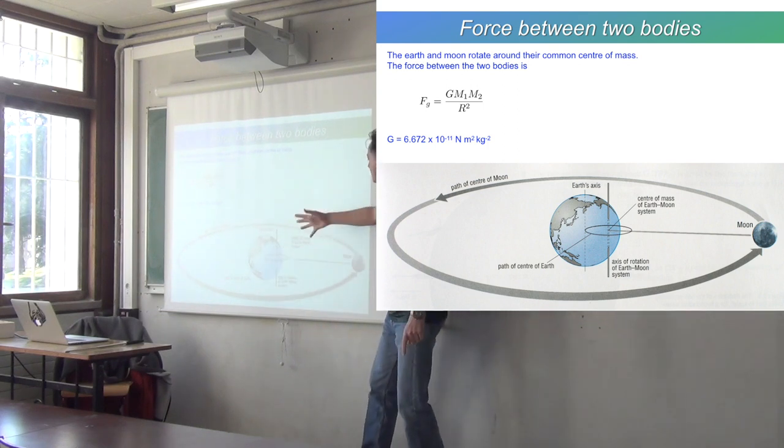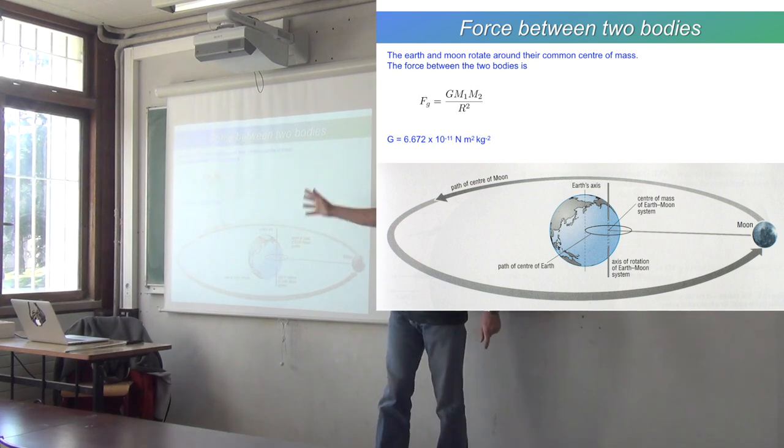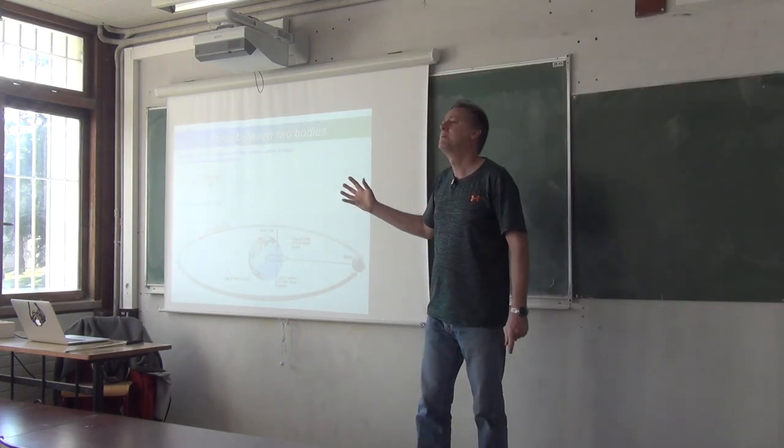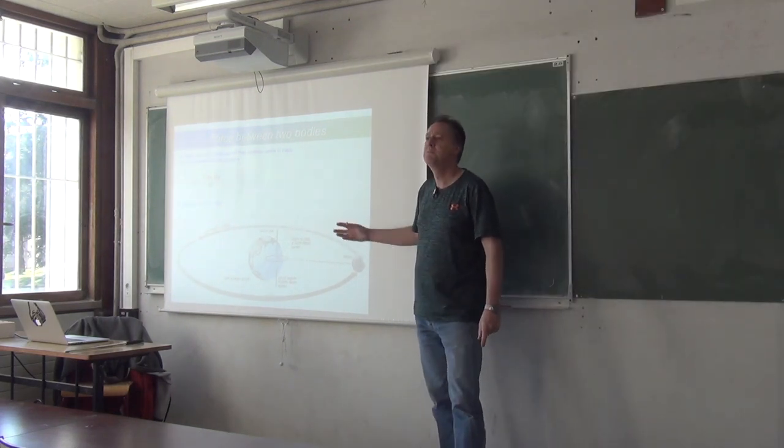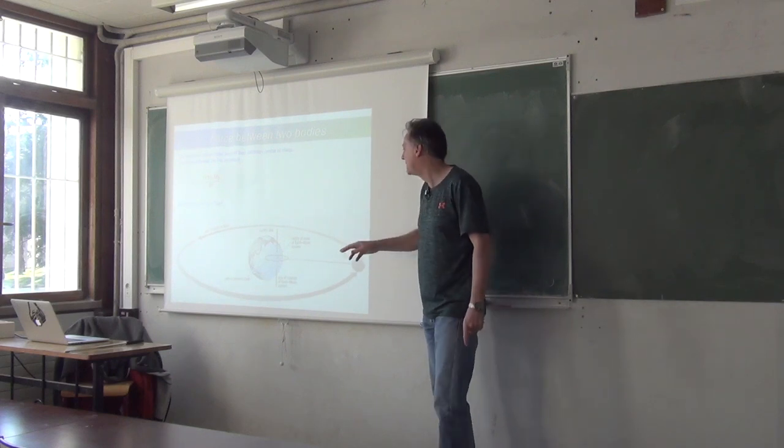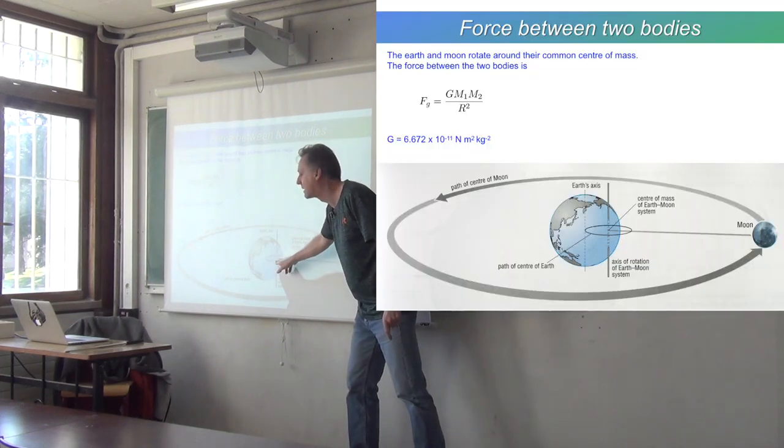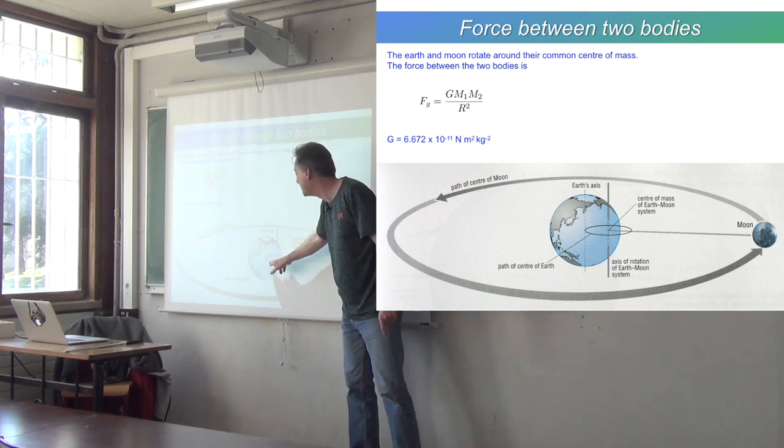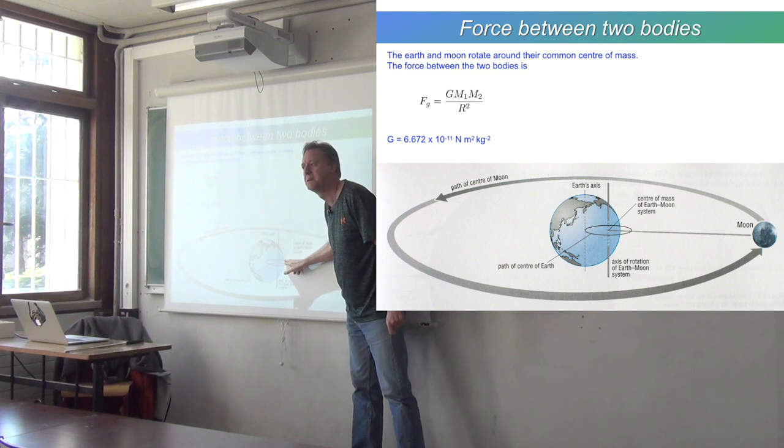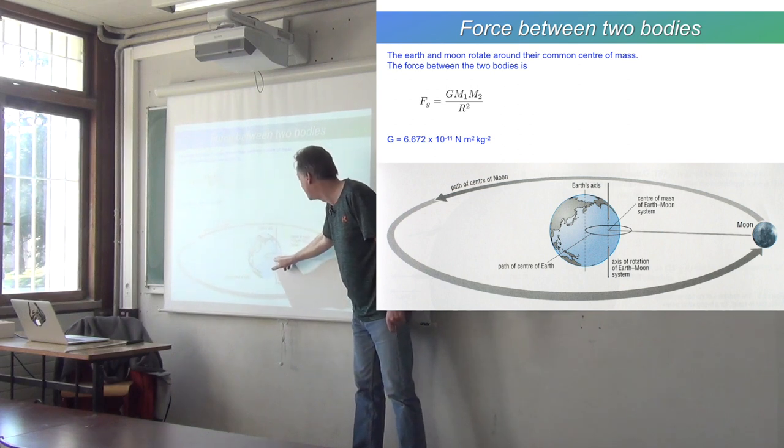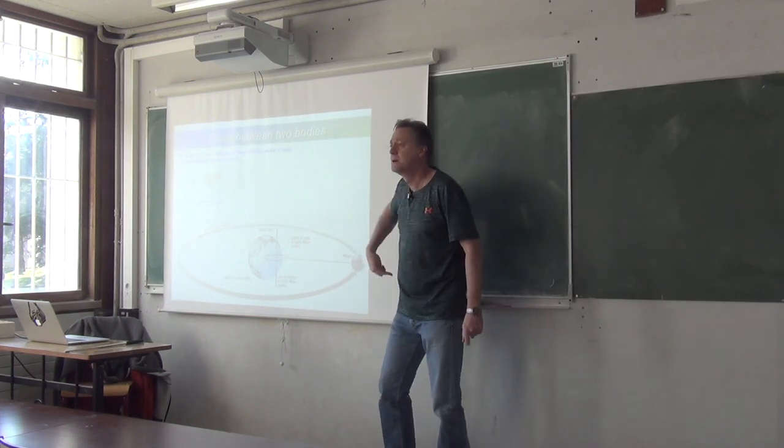The Earth and the Moon dance around their common center of mass, but the Earth is something like 100 times more massive than the Moon. So that common center of mass is actually very close to the center of the Earth. It's actually within the Earth. It's closer to the center of the Earth than the surface of the Earth is.